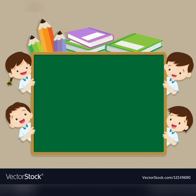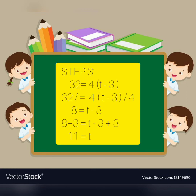Our third step in Polya's method is to carry out the plan or solve. Since 32 is the exact age of Phil three years ago, we write the equation: 32 equals four times the quantity (t minus 3). Since 32 and 4 are both divisible by 4, we divide both sides by 4.